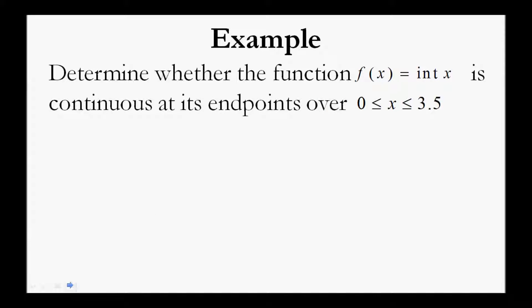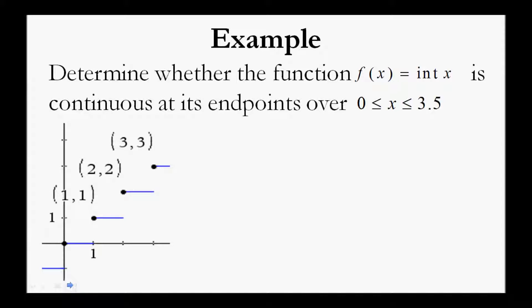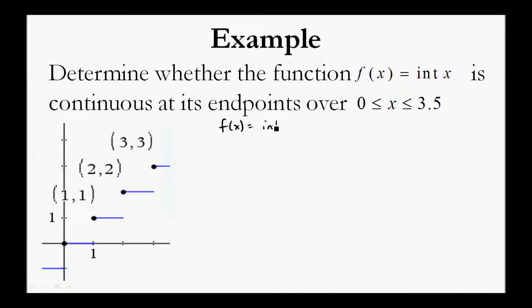Determine whether the function f of x equals int(x) is continuous at its endpoints over the domain 0 is less than or equal to x, which is less than or equal to 3.5. Here we have the graph in question — it's a greatest integer function. When we graph f of x equals int(x) over this interval, we see how the greatest integer function is discontinuous at every integer.